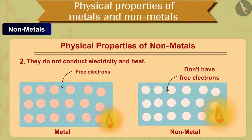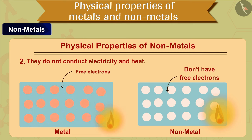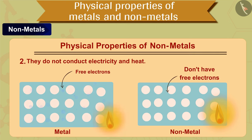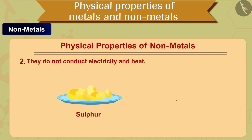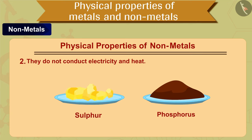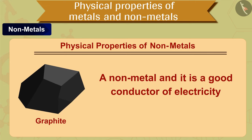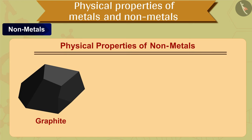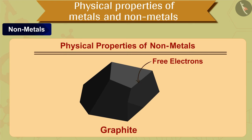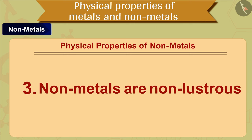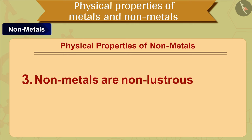The second property of non-metals is that they do not conduct electricity or heat. Unlike metals, non-metals do not have free electrons. For example, sulfur and phosphorus. However, graphite, which is a non-metal, is a good conductor of electricity — it is the only non-metal known to conduct electricity, due to the presence of free electrons.